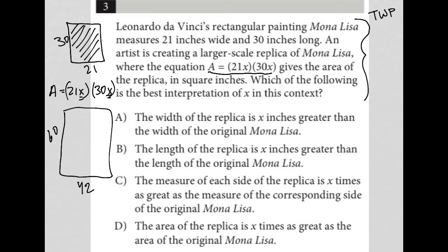just double the size of the original. If X were three, we'd end up with a 90 by 63. So let's look at the answer choices and see what makes the most sense.